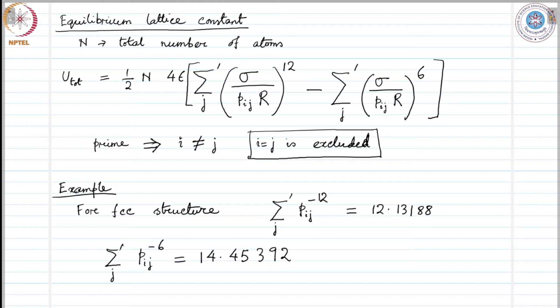If we consider HCP structure, then what happens to this sum? Pij to the power minus 12, this sum goes to 12.13229 and Pij to the power minus 6 goes to 14.45489. You can see that the numbers are not much different. Up to the second decimal place it is exactly the same. Only helium has HCP structure among the inert gas crystals; everything else has FCC structure. But we can express these values as the same value, there is no problem.